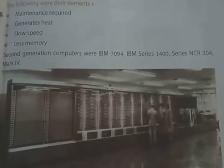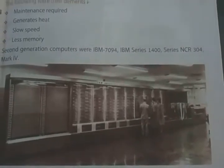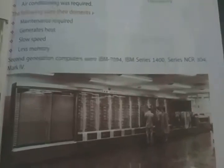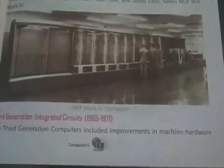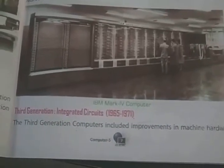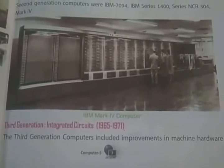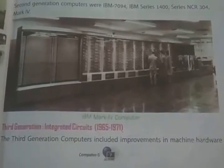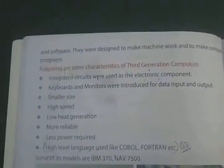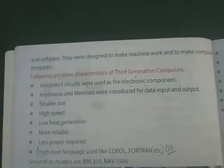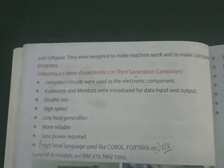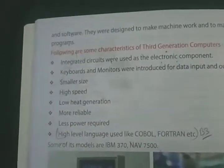Examples of second generation computers are IBM 7094, IBM Series 1400, NCR 304, and Mark IV. Next come third generation computers, which used integrated circuits, from 1965 to 1971. Improvements were made to both hardware and software. They were designed to make machines work better and to allow computers to be programmed more effectively.